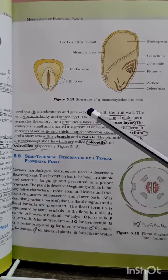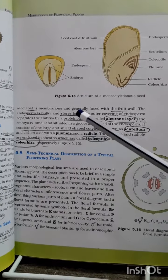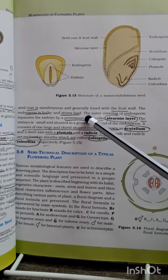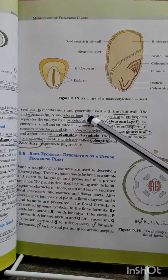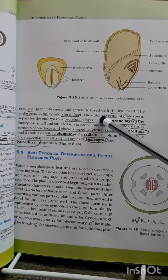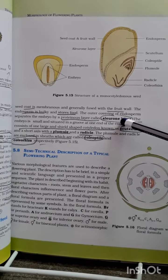The endosperm is bulky and stores food. As I told you earlier, it has a proteinaceous outer layer. You have to remember the word for this outer covering, which is proteinaceous, called aleurone. This question has been asked multiple times and this is a very important line.